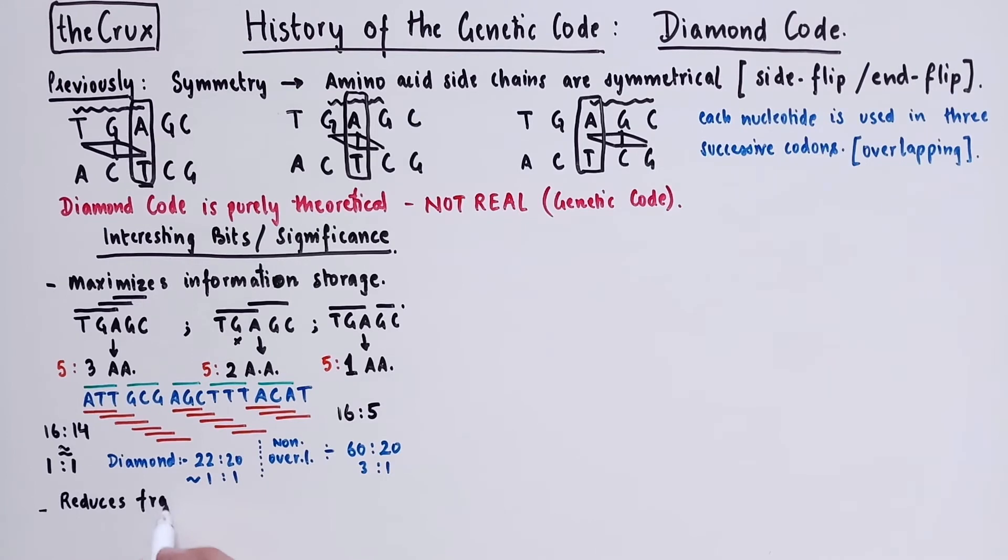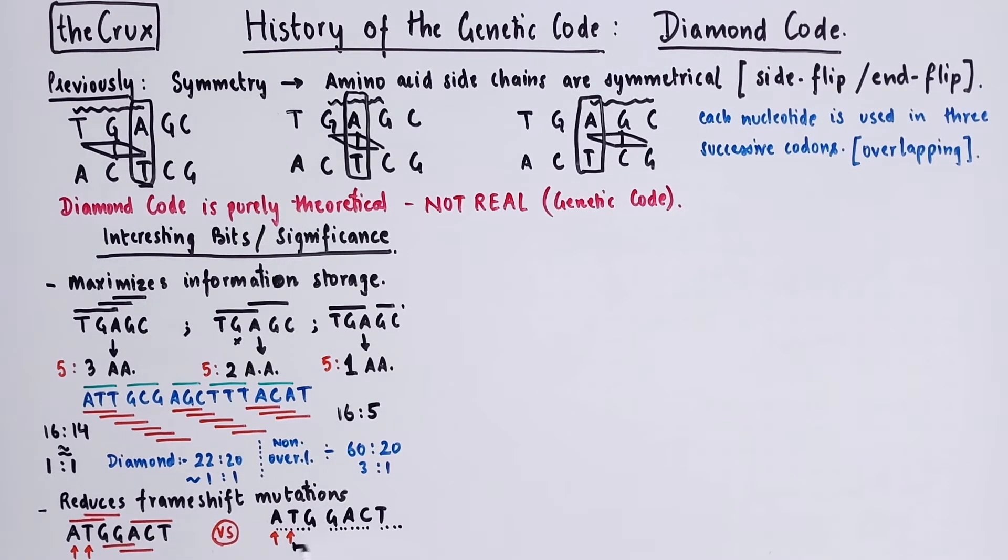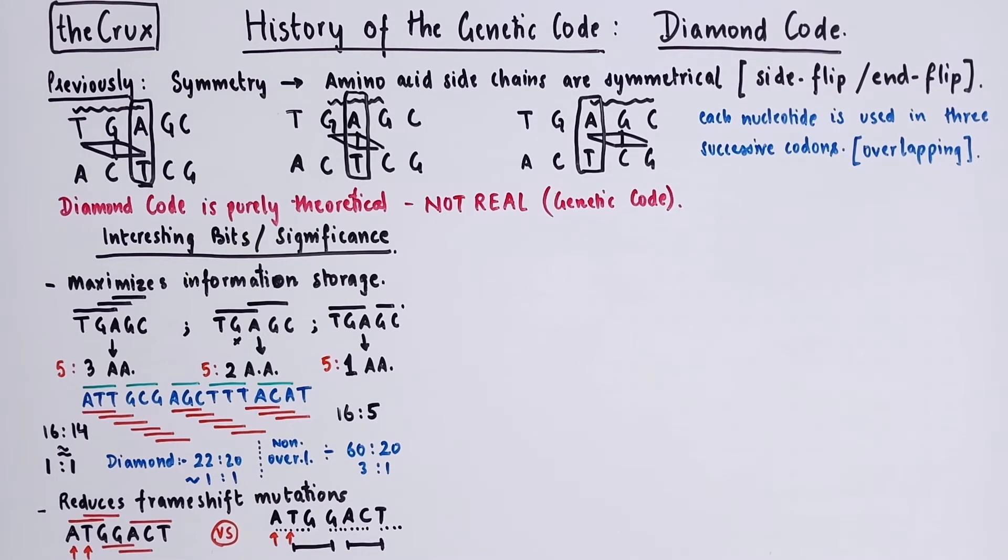The other important significance of the diamond code is that it reduces frameshift mutation consequences. So if you have this DNA sequence, you will have an overlapping set of codons. And if you shift the reading frame from A to T, you will only affect the ATG codon, which is the first codon, and nothing downstream of it. So the consequence of frameshift in the diamond code at most can appear like a deletion. Versus in the non-overlapping genetic code, the same sequence will read as ATG and GAC. But if you shift the frame from A to T, this will cause it to be read as TGG and ACT. So it changes the meaning completely. So these are the two interesting bits about the diamond code.